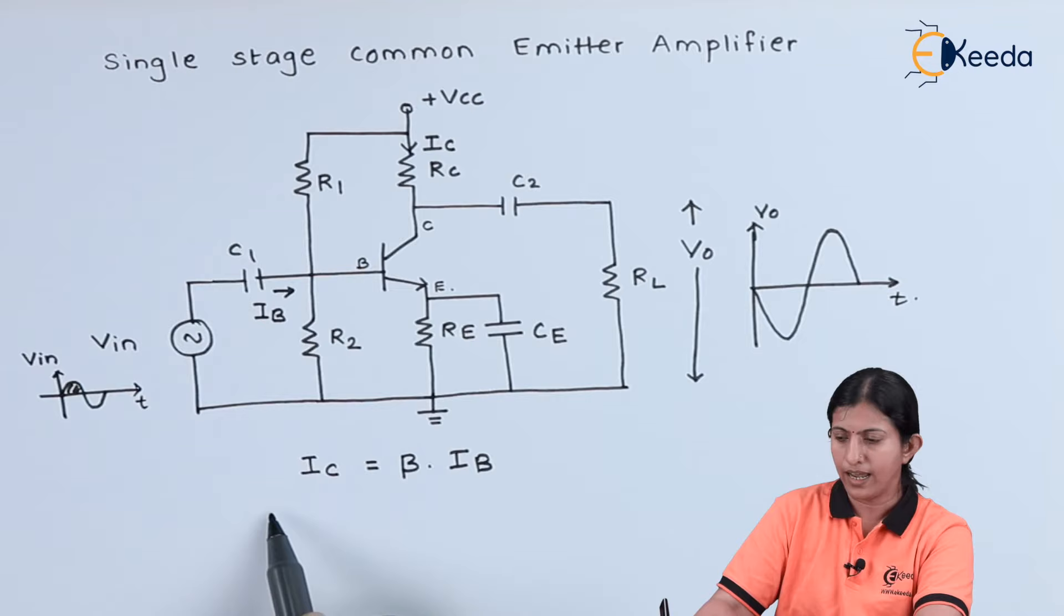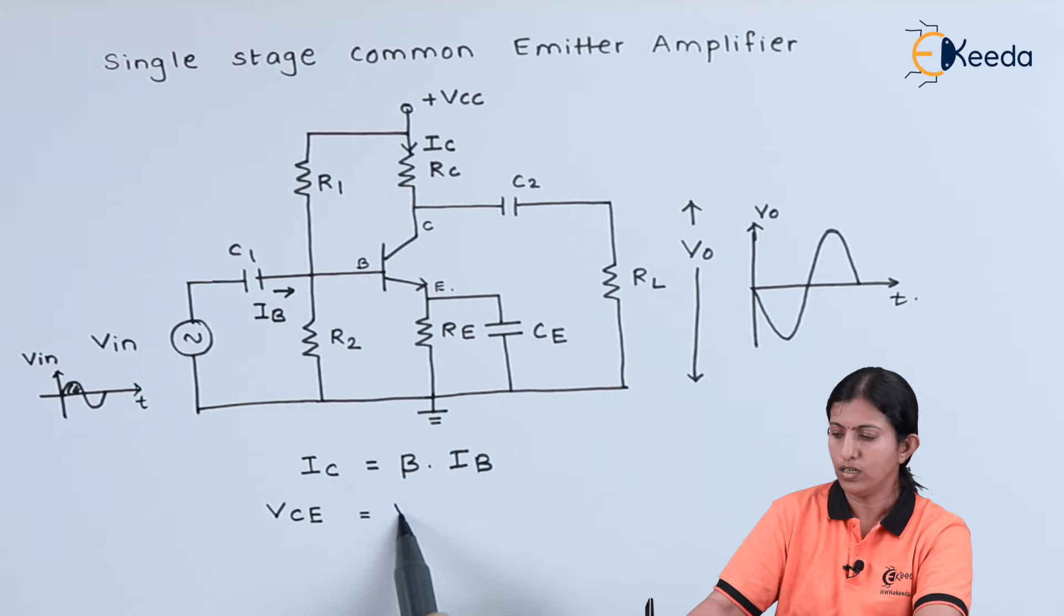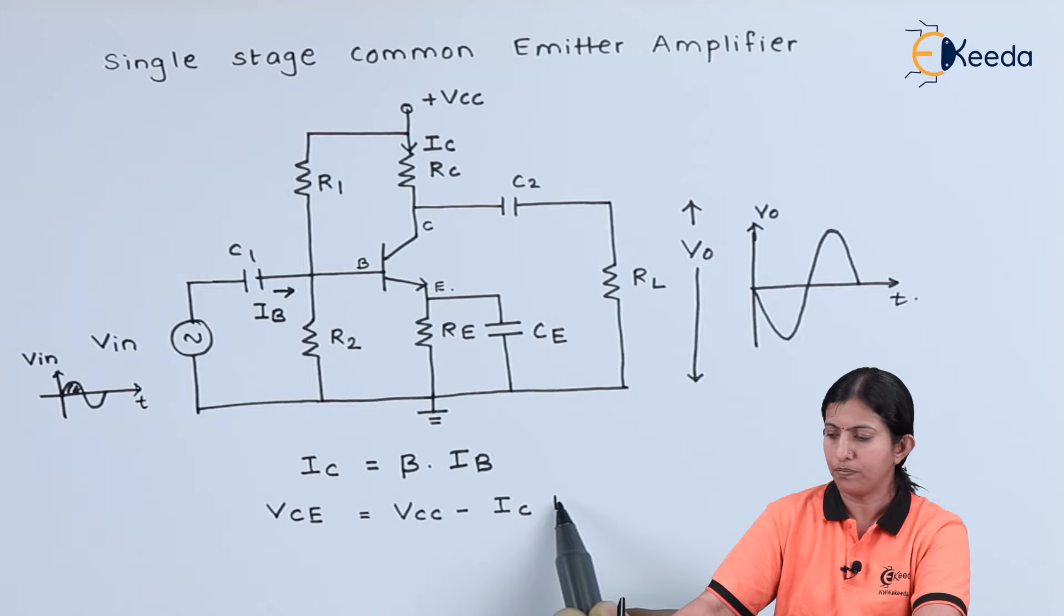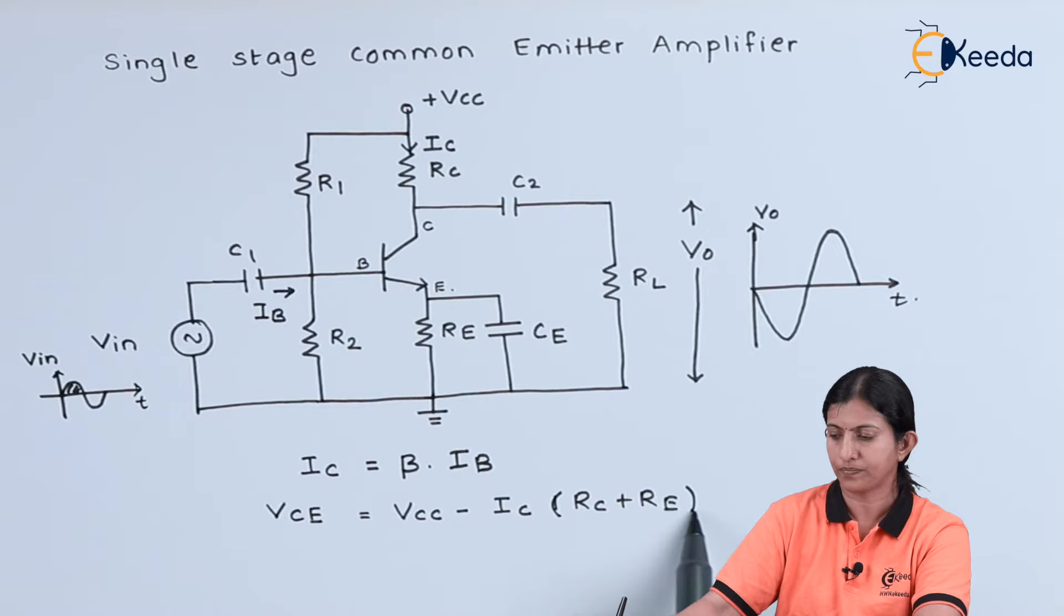Then at the output across the RL, the voltage is calculated as VCE is equal to VCC minus IC in bracket RC plus RE.